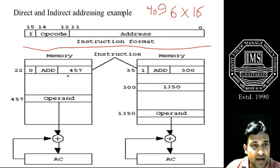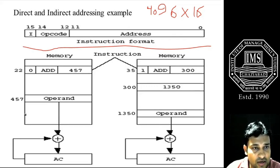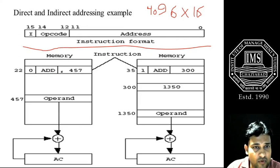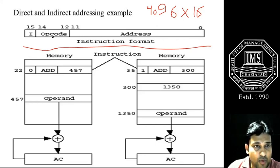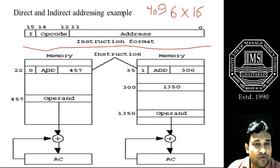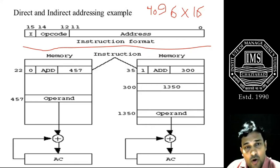Moving further towards direct addressing: suppose this is a memory slot and we have a number of slots. This is the format for an instruction code. With I representing 0, this indicates direct addressing, and ADD is the opcode signifying that an addition operation is going to be performed on the operands.